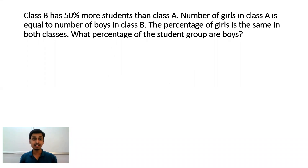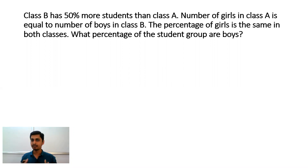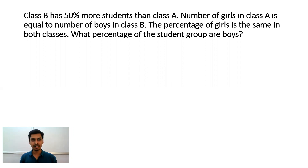Class B has 50% more students than class A. The number of girls in class A is equal to the number of boys in class B. The percentage of girls is the same in both the classes. What percentage of the student group are boys? If you want to practice, pause the video for a minute, give your trial, then play the video. Else we shall start working.